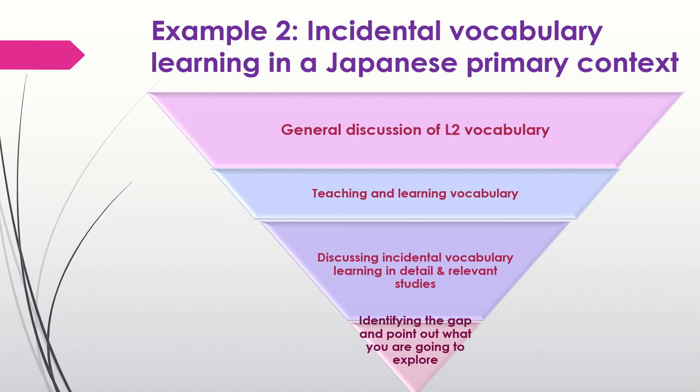I'd like to point out that the literature review should be up to date. This means that you need to cite recent sources. Of course, depending on your topic, you might need to cite some sources published in the 70s, 80s, 90s or even earlier. But you need to cite recent sources as well to show that you know what is going on in the field now around your topic.